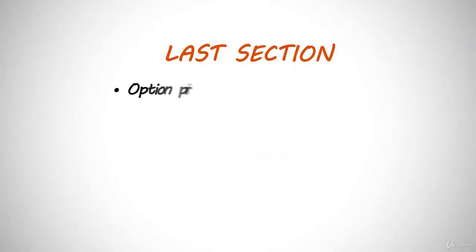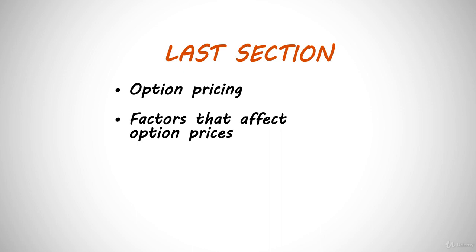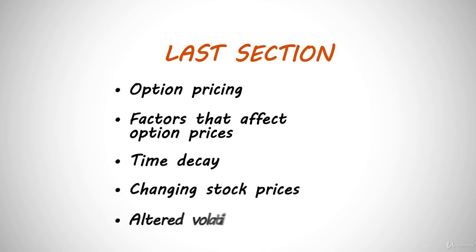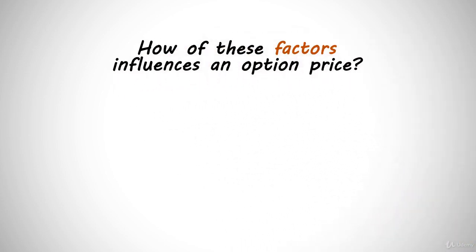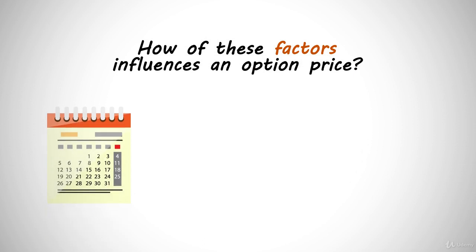In the last section, you learned about option pricing and the factors that affect option prices. We even did some experiments to see how the option's price would be affected based on time decay, changing stock prices, and altered volatility. But the real question is how each of these factors influences an option's price. If a week goes by, or two weeks, or a month, how much will that time decay reduce an option's value?